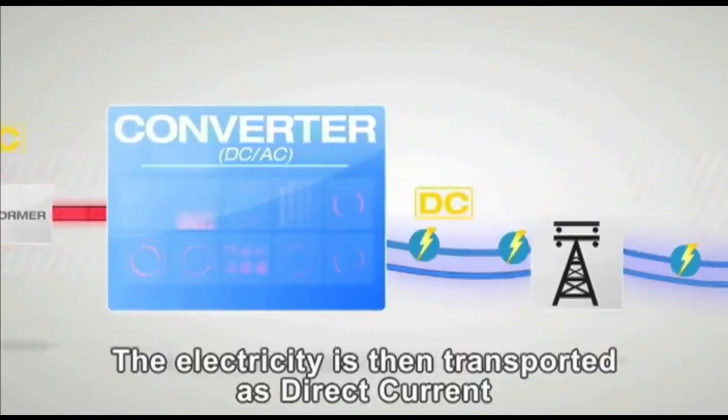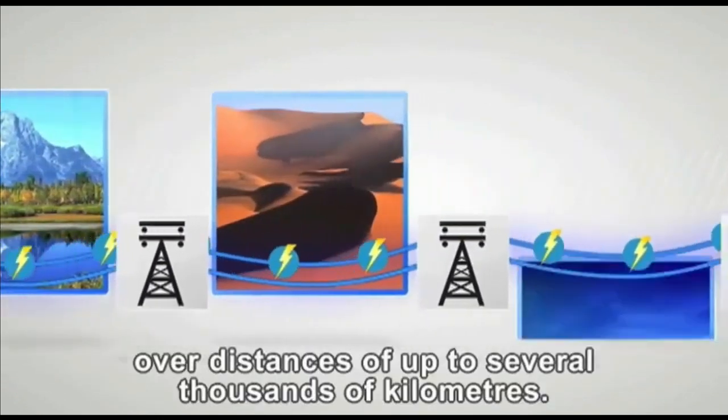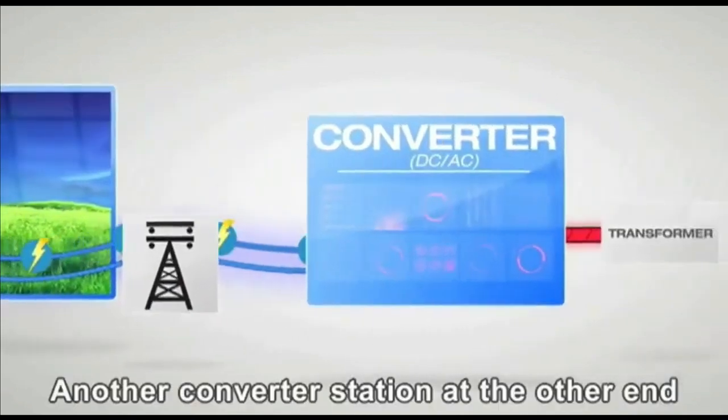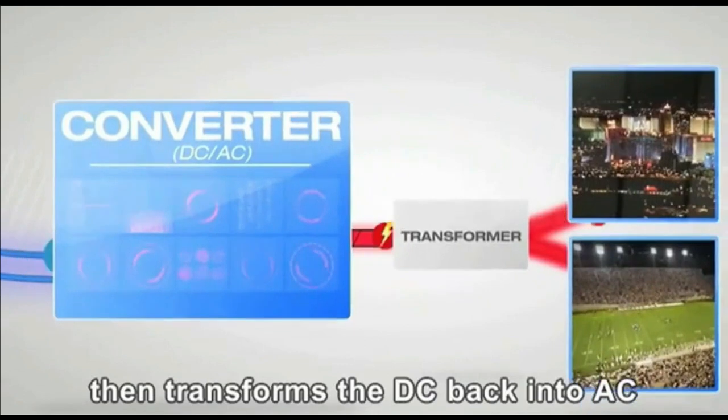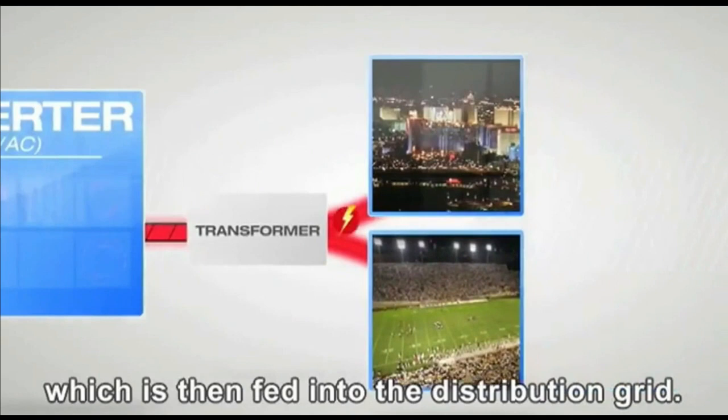The electricity is then transported as direct current via high voltage transmission lines over distances of up to several thousands of kilometers. Another converter station at the other end then transforms the DC back into AC, which is then fed into the distribution grid.